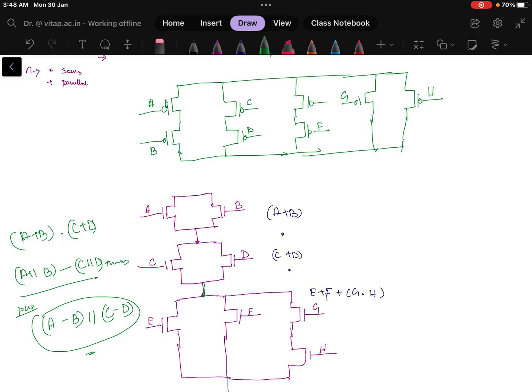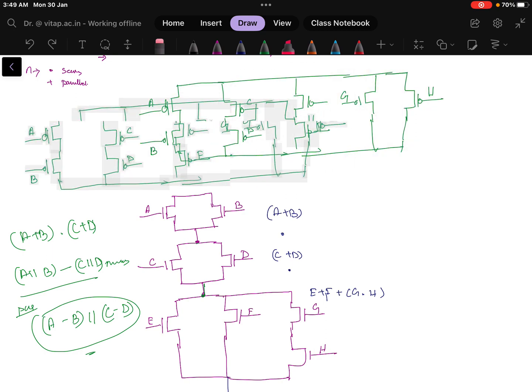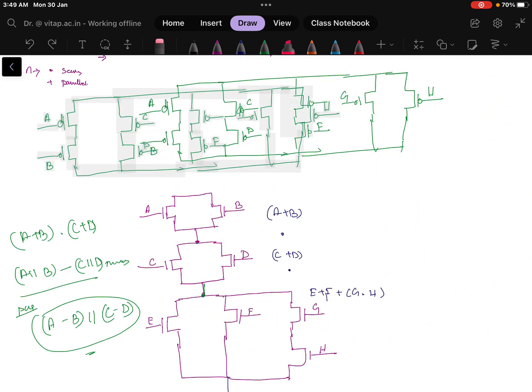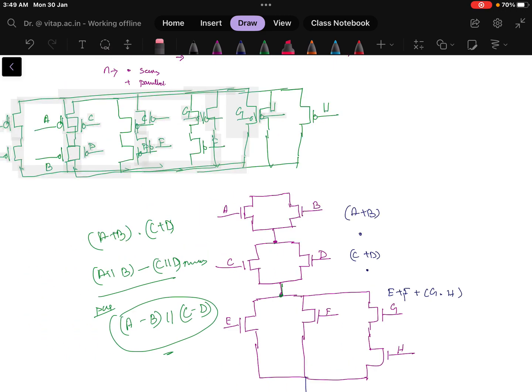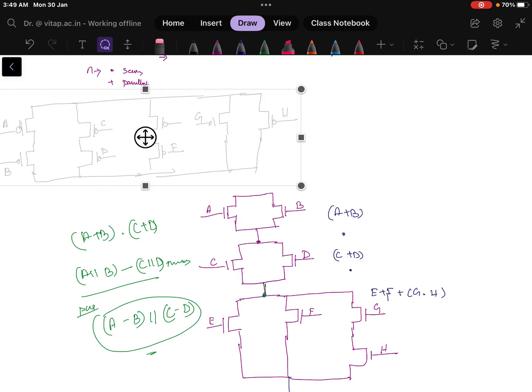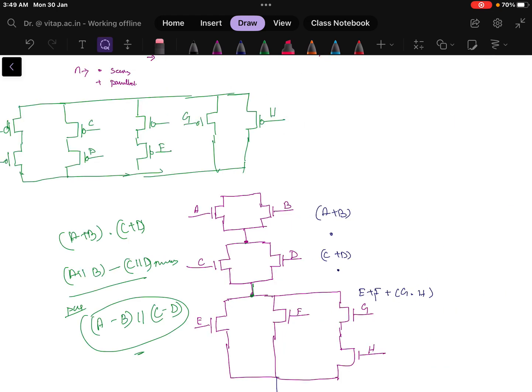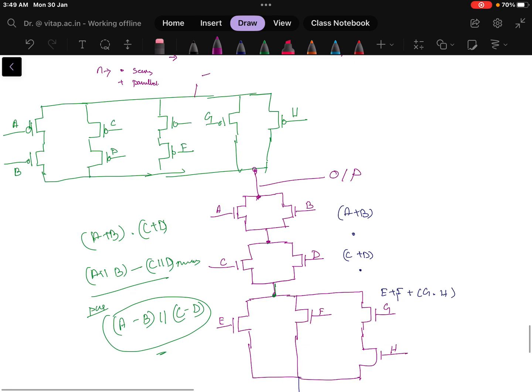This will be your combination and where to take the output? The output will be taken from here, this will be the common point and this will be your output. Let me just put it simple. I will just transfer all this little bit of this side. Now the output will be connect this one and this one, this will be your output and plus five volt will be connected here or positive voltage will be connected at this point.